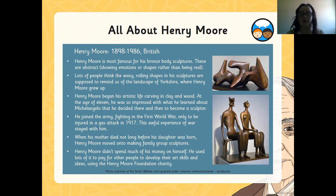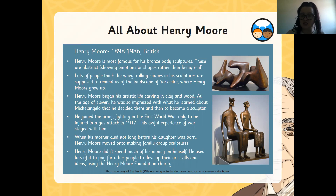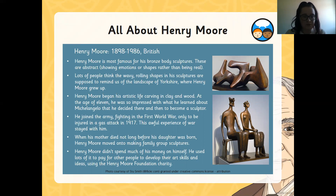Yorkshire is not too far away from us, Year 3. Henry Moore began his artistic life by carving in clay and wood, and then he moved on to other things. At the age of 11, he was so impressed with what he'd learned about Michelangelo that he decided there and then to become a sculptor. He joined the army and was fighting in the First World War, but he got injured in a gas attack in 1917. That can be really dangerous, and this awful experience of war stayed with him — he never forgot being in the army and being attacked in the First World War.